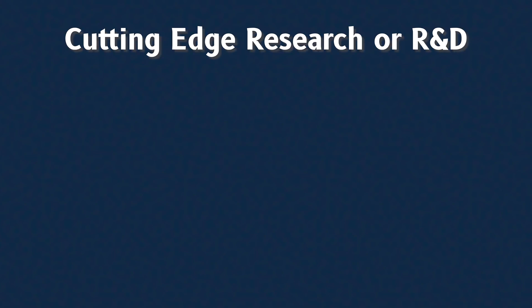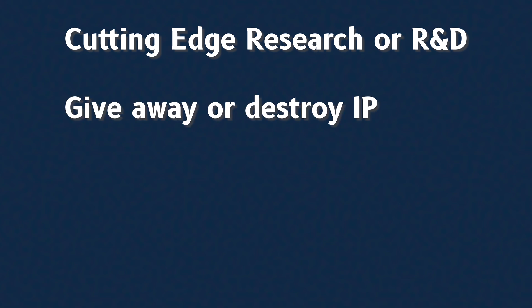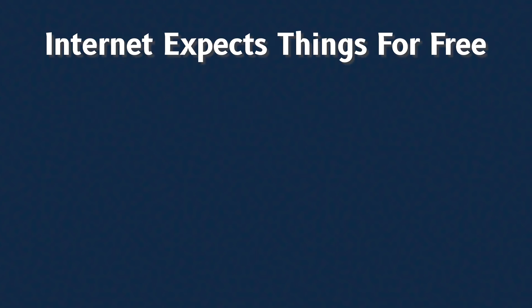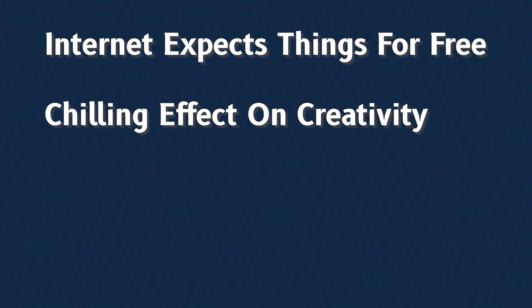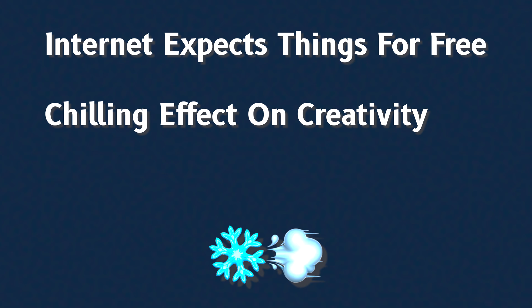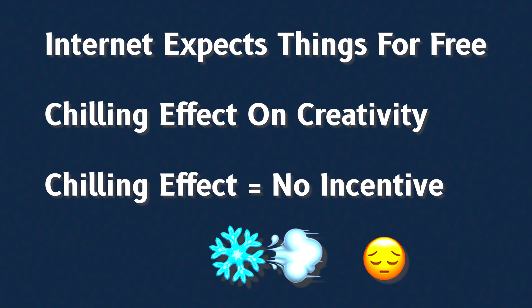If I give up my research to the AI model for training, once the model is updated and becomes available to more people, someone could ask questions that cause the AI to give away my research even though it's not ready for publication yet. This might stop me from being able to protect my own intellectual property and prevent me from getting a patent. As another example, as a creator, the internet has shifted to a mentality of expecting everything for free, which has devalued a lot of creative and knowledge work, because people are no longer incentivized to create if someone else is monetizing their work.